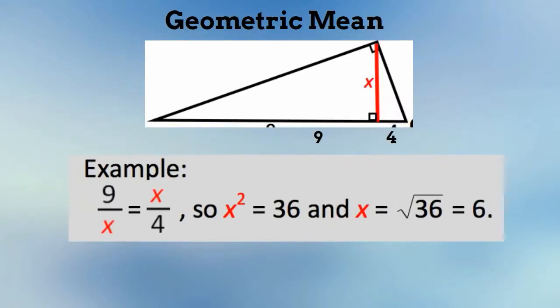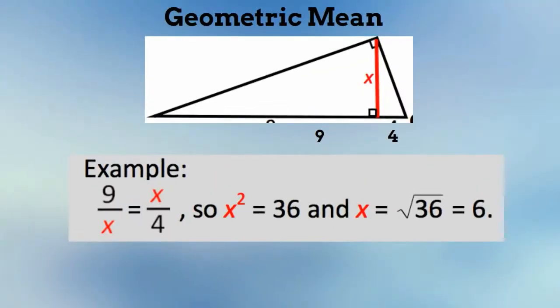The geometric mean states that in a right triangle the length of the altitude is the geometric mean of the length of the two segments. So in this example you have 9 over x equals x over 4, so x squared equals 36, and then x equals the square root of 36, which is 6. That is an example using the geometric mean.